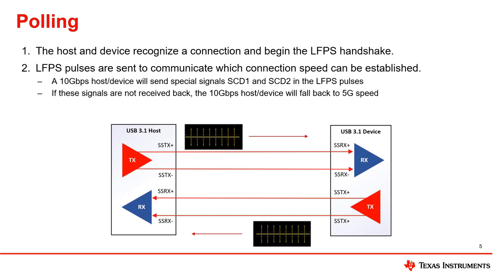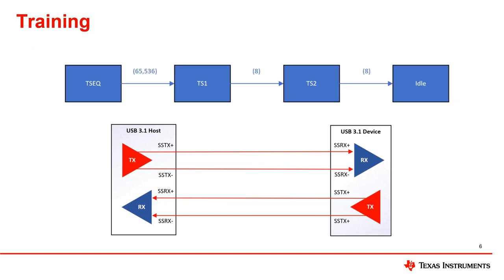If both ports are capable of 10 gig data rates, they will transmit two signals called SCD1 and SCD2 to confirm a 10 gig connection is viable. Once the operation speed is determined, both ports will enter the training stage. Training is the final stage of polling that transitions the USB connection into the active state. It begins with both ports sending ordered sets, called TSEQ, to each other. These are combinations of symbols that ensure the link between host and device is stable.